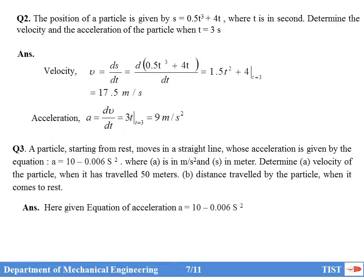Since acceleration is a function of position and not constant, you should never use v = u + at, s = ut + ½at², or v² = u² + 2as. We must use the general expression. Since acceleration is not a function of time, the general expression reduces to a = v·dv/ds. So: v·dv/ds = 10 − 0.006S². Rearranging: v·dv = (10 − 0.006S²)·dS.